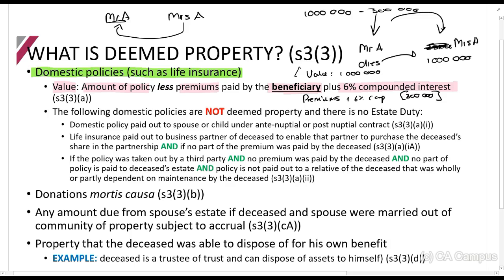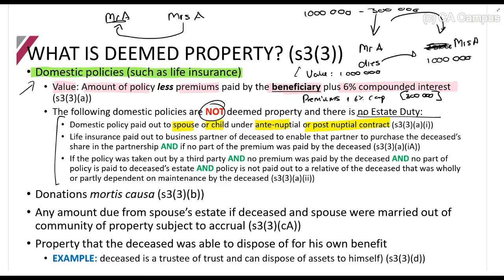The following domestic policies are not deemed property and attract no estate duty — these are the exceptions to the rule. The first exception is if the life insurance is paid out to a spouse or child under an antenuptial or postnuptial contract — a contract signed before or after marriage stipulating that life insurance goes to the spouse or child. That is not included in the estate.